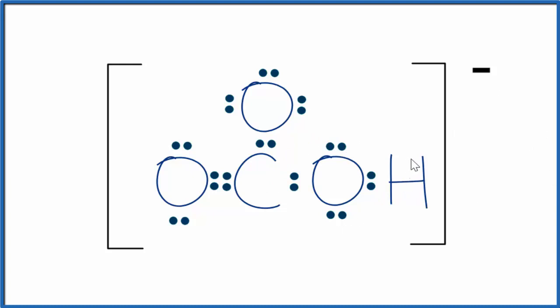So there are two primary resonance structures for the bicarbonate ion. Really when we think about molecules that have resonance, it's a mix of the two structures.